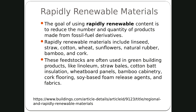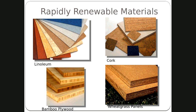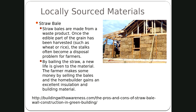Rapidly renewable materials include true linoleum — the same color all the way through, unlike cheaper linoleum that just has color on top. Cork is a renewable material. Bamboo plywood is another option. Wheatgrass panels can be used for countertops — they're actually quite nice and made from renewable wheatgrass. Straw bale is another option — you could make a house out of straw bales.